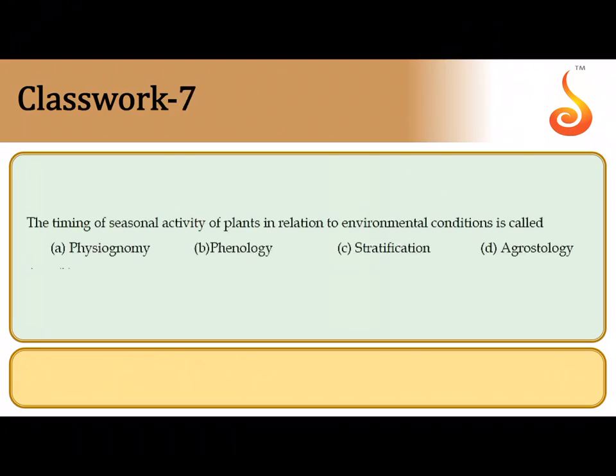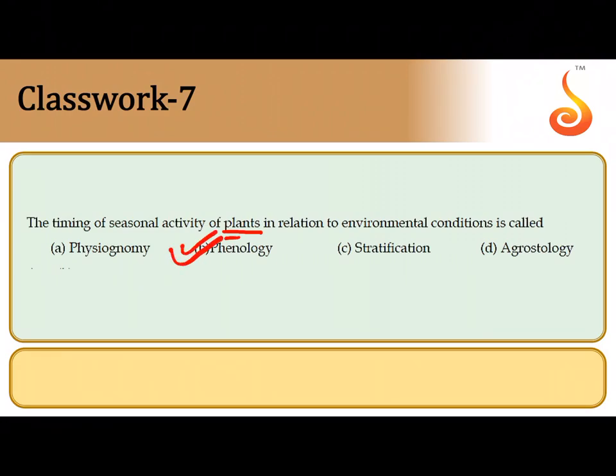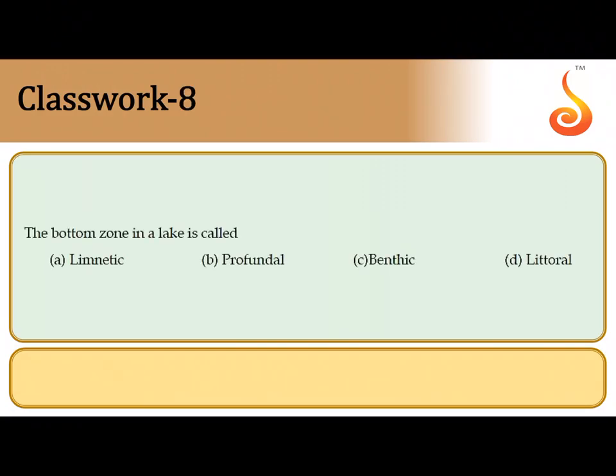The seventh question covers the timing of seasonal activity in plants — for example, plants flower in different seasons depending on day length and the length of uninterrupted darkness. This kind of seasonal activity in relation to an environmental condition is referred to as phenology, so the correct answer is the second option. The bottom zone of the lake is referred to as the benthic zone, so the answer is option C.